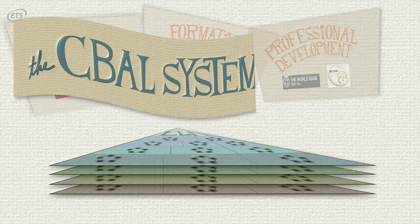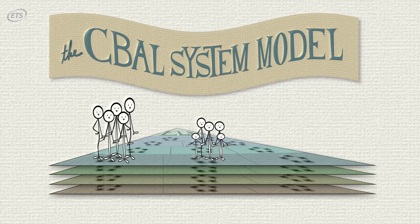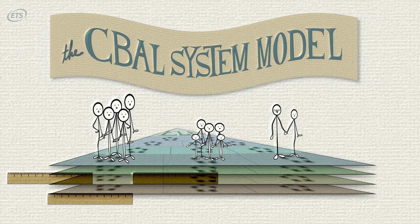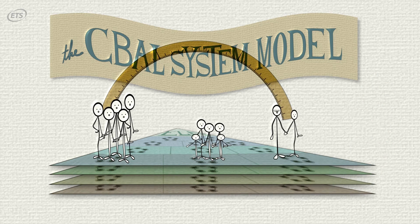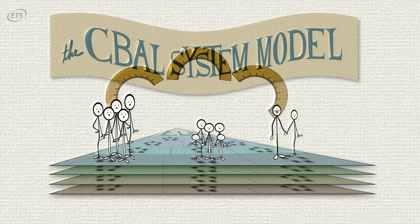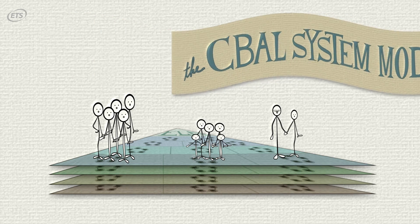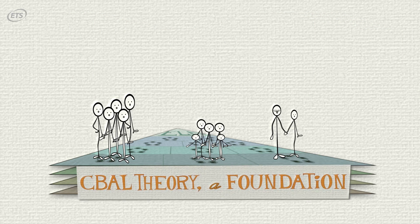The C-Ball system model intends to target development at different audiences by creating different assessments that respond to those different audiences' needs. The overarching goal of each of those assessments is to not only measure well for the purposes of the audience, but also to have a positive impact on how those individuals and institutions behave.